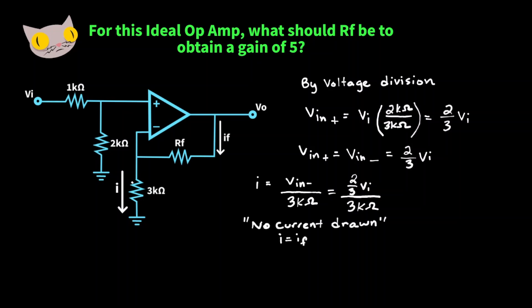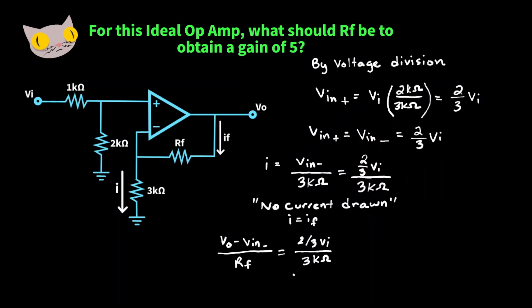This current and this current are the same. So we can write this value for current as VO minus VIN negative over RF, and that's equal to two-thirds VI over 3,000 ohms.